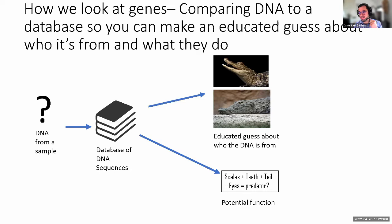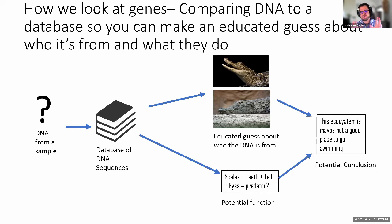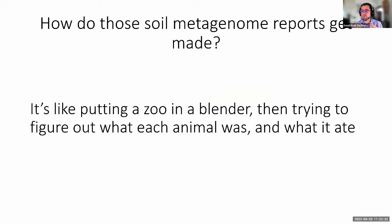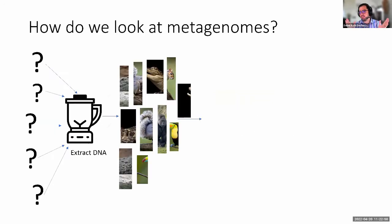When we get this data — this idea of who is there and what they do — we try to put those together to draw a conclusion about the place that DNA came from. If I had a DNA sample very similar to crocodile or alligator DNA with genes for scales, teeth, and a tail, I would conclude that this ecosystem is not really a good place to go swimming. That's how we would look at one DNA sample. However, soil is very diverse — you're not just looking at one DNA sample, you're looking at several.